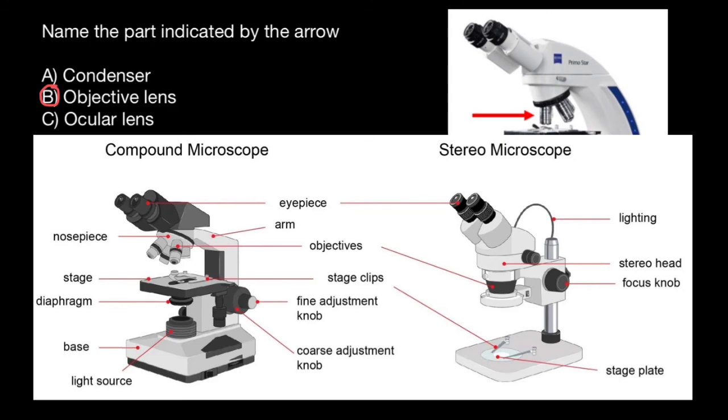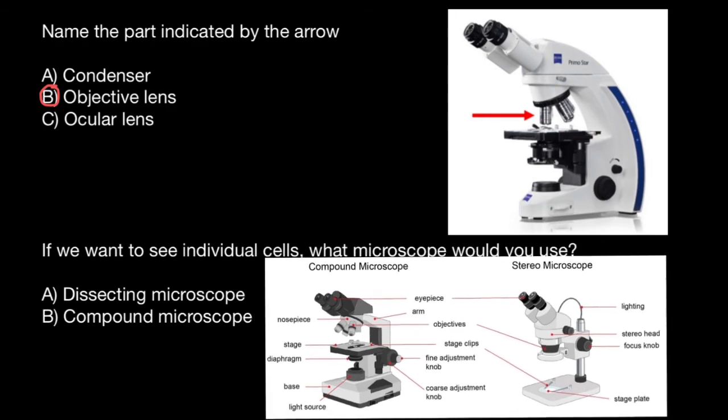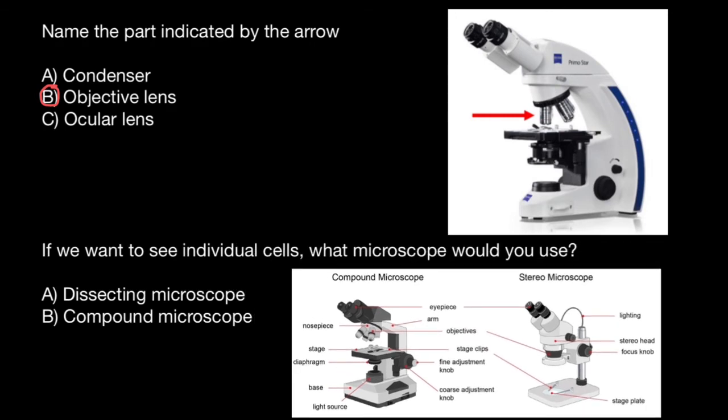And we can see it through eyepieces or ocular lenses. Now let's check the answer variants. So if you want to see individual cells, we are going to use a compound microscope, variant B.